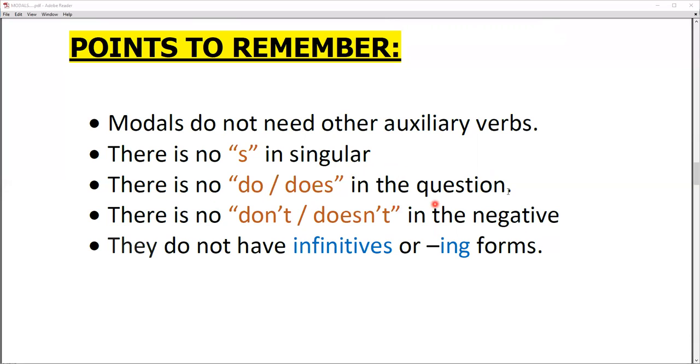There is no do or does in the question. When we use the question, then we will not apply do or does because the model itself would work. There is no don't or doesn't in the negative. It is the same. So I will apply cannot, not can do not. That is the wrong way. To use cannot, must not, need not.